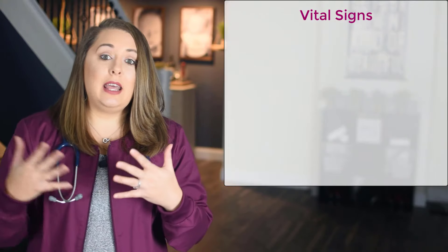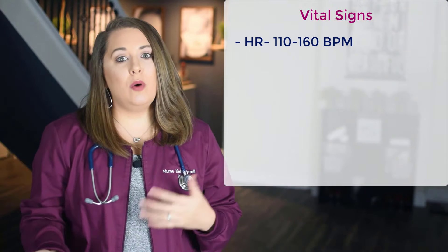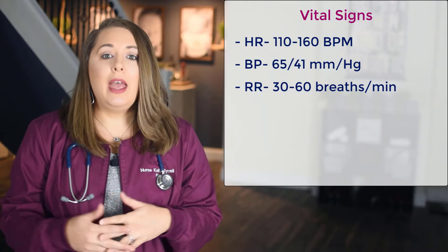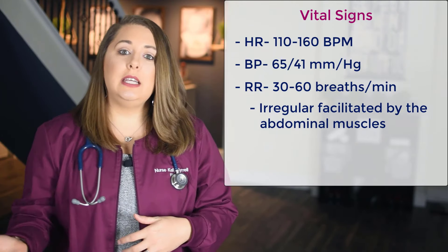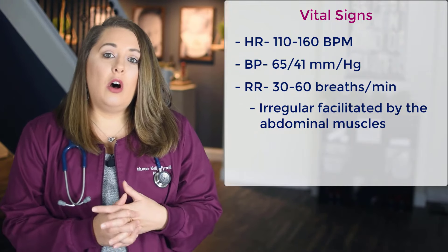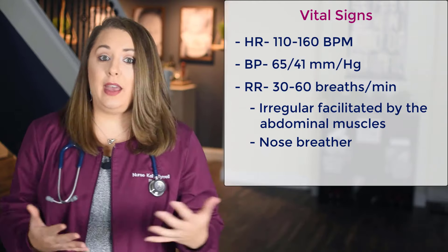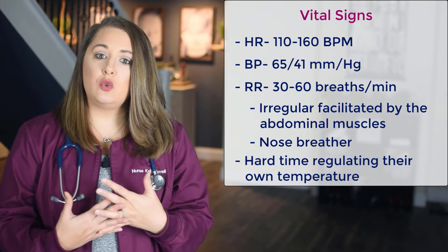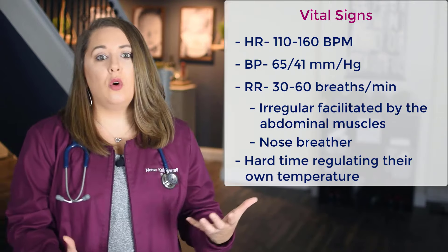You'll also want to be familiar with vital signs during the neonatal period, because they are vastly different from normal adult vital signs. Normal vital signs for a neonate: heart rate 110 to 160 beats per minute, blood pressure 65 over 41, respiratory rate 30 to 60 breaths per minute. Breathing is somewhat irregular and facilitated by the abdominal muscles, so you'll see the infant's belly move up and down with each breath. The neonate will also be primarily a nose breather, so even a simple cold with nasal congestion can significantly affect breathing. Neonates also have a hard time regulating their own body temperature, so educate parents on dressing neonates appropriately to help regulate their core body temperature.